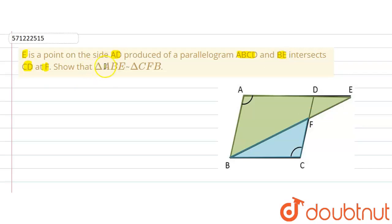Now we are required to show or prove that triangle ABE will be similar to triangle CFB. Now, if we observe this parallelogram that is ABCD, then what we find is that this angle, that is angle DAB will be equal to angle BCF. Because opposite angles of parallelogram are equal.